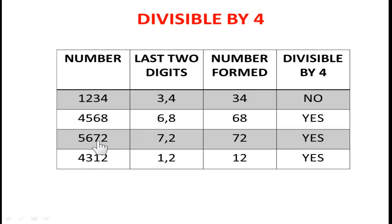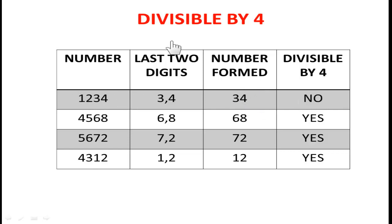For the third number 5672, take the last two digits 7 and 2 — they form the number 72. Since 72 is divisible by 4, the number 5672 is also divisible by 4. So the divisibility rule of 4 is: take any number, check the last two digits and form the number from them. If that last two-digit number is divisible by 4, then the given number is also divisible by 4. This is similar to the rule of 2 but uses the ones and tens place.